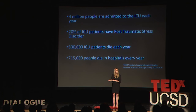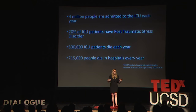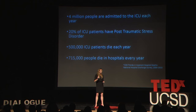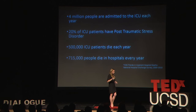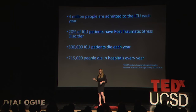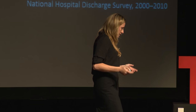So why is this happening? Could it be that we're not talking about death, and that is why patients are dying in hospitals? In the ICU each year, 4 million people are entering with a mortality rate of between 8 and 19 percent — 500,000 people are dying in the ICU every year. Of the patients that survive, 20 percent have post-traumatic stress disorder at one-year follow-up. Even more than that, 715,000 people are dying in the U.S. each year. Could it be because we're not talking about death?